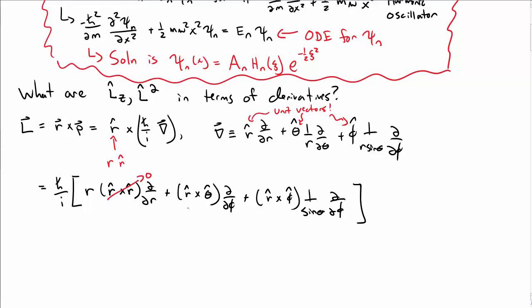Okay, there we go. r hat cross r hat is zero, r hat cross theta hat is phi hat, and r hat cross phi hat is minus theta hat. So the angular momentum operator written in terms of spherical coordinates would look something like this.